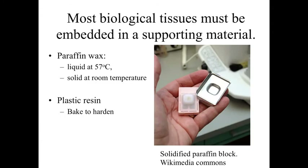Once we've done that, we can embed the tissue in a supporting media. For light microscopy, we primarily use paraffin wax: we soak the biological tissue in warm wax, put it into a mold, allow it to cool, and it becomes solidified and supported so we can cut it. For plastic resins, it's the same basic idea — we soak the tissue in liquid resin, put it in a mold, and bake it to harden it into a supporting structure around our biological tissue.